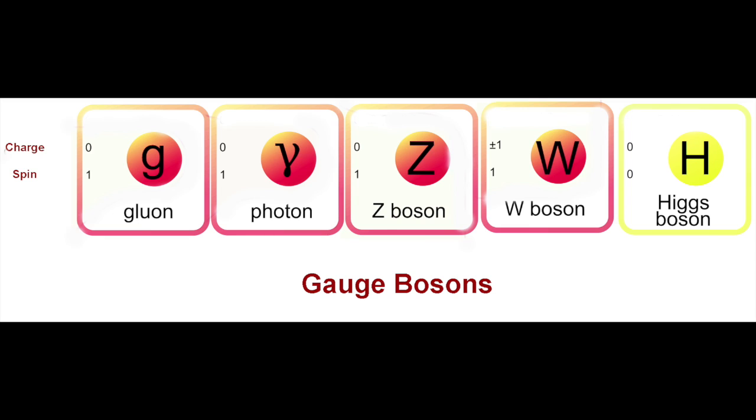The Z, W and Higgs bosons are far more massive than any of the fermions, than any of the quarks or leptons.